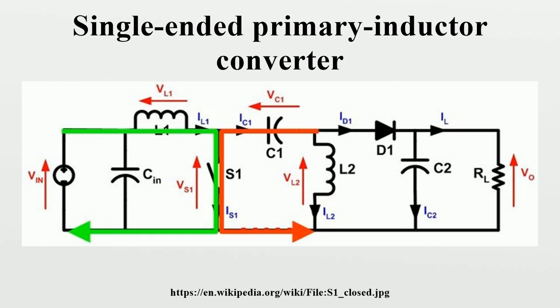The boost-buck capabilities of the SEPIC are possible because of capacitor C1 and inductor L2. Inductor L1 and switch S1 create a standard boost converter, which generates a voltage that is higher than VIN,